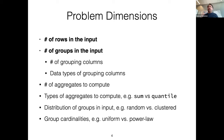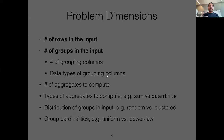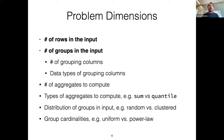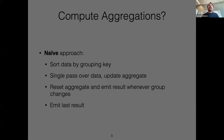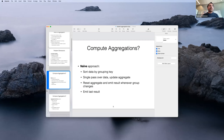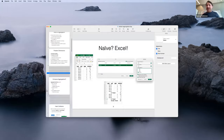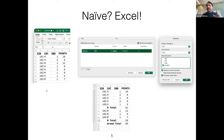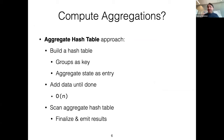Traditionally, what people would do is sort and then aggregate. In Excel, you sort the input and click the Subtotal button — which I didn't know existed — and it gives you group aggregates. But this can be done better, because sorting still has O(n log n) complexity. The way to do this better is with aggregate hash tables.